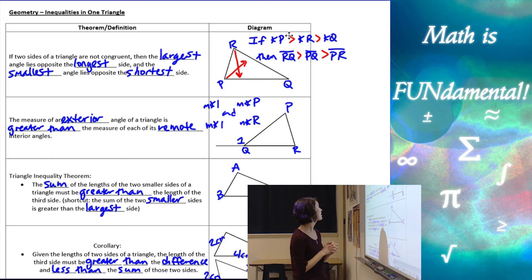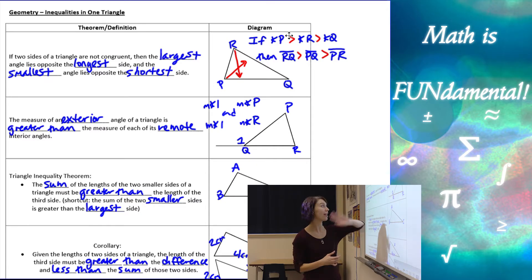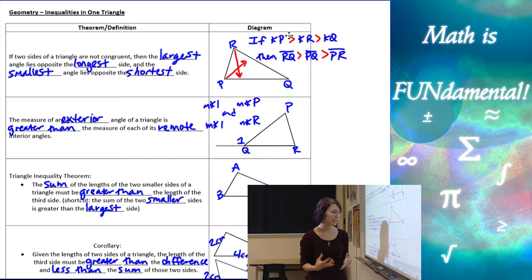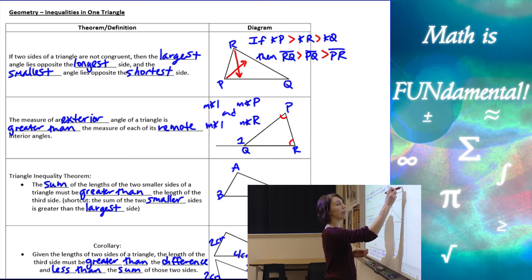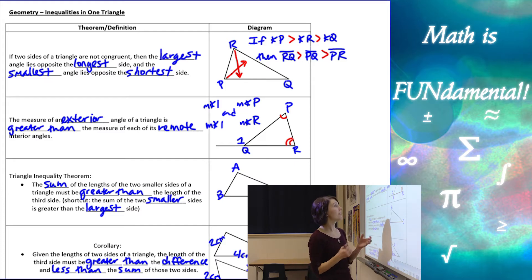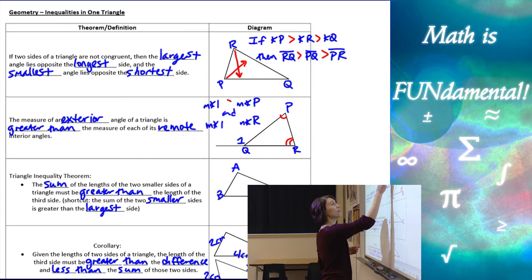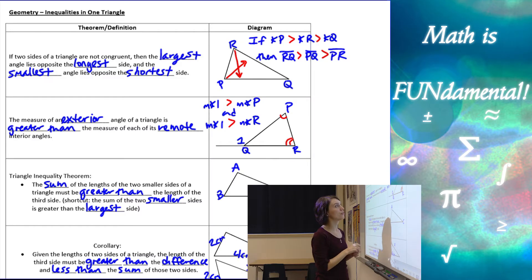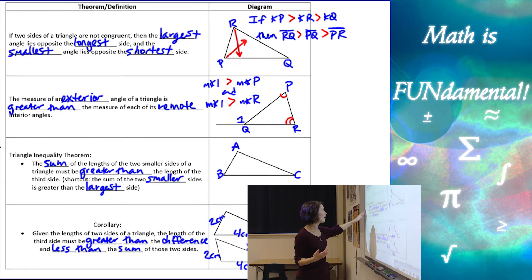The second theorem says that the measure of an exterior angle — so if we look at our diagram, angle 1 is an exterior angle — is going to be greater than the measure of each of its remote interior angles. So if angle 1 is the exterior angle, the remote interior angles are P and R, the ones not connected to our exterior angle. So angle 1 has to be greater than angle P and greater than angle R.